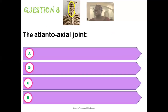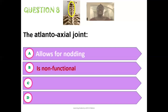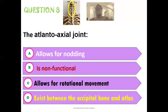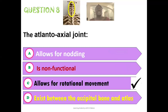The eighth question: what does the atlanto-axial joint allow? Options are: nodding, it is a non-functional joint, rotational movement, or it exists between the occipital bone and the atlas. The atlanto-axial joint exists between the atlas (C1) and the axis (C2). The correct answer is that it allows for rotational movement.